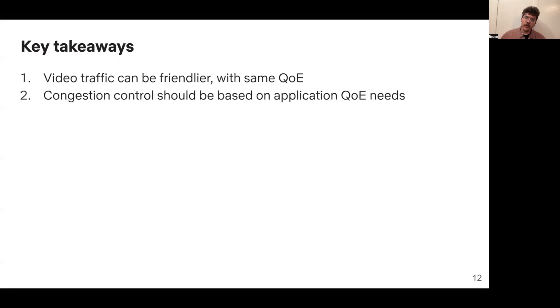In our paper, we show that this is not necessarily the case, and we can actually make video traffic friendlier while maintaining the same QoE as today's top production algorithms. In doing so, our work suggests that congestion-neutral algorithms should be based on the QoE needs of the application, and if they can do this, there's significant room for improvement.